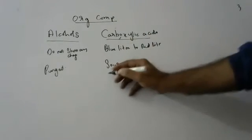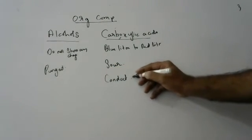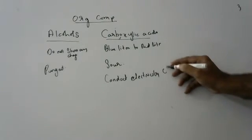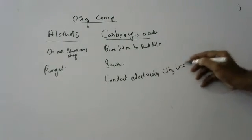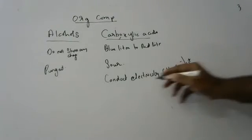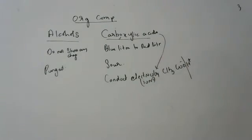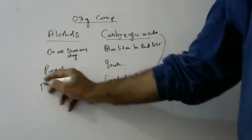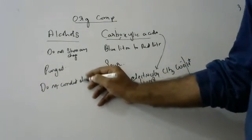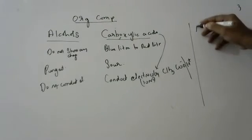Next, carboxylic acids conduct electricity. Why do acids conduct electricity? Because they decompose into ions — H⁺ and a negative ion. Because ions are present, carboxylic acids conduct electricity. Whereas alcohols do not conduct electricity. Why do alcohols not conduct electricity?